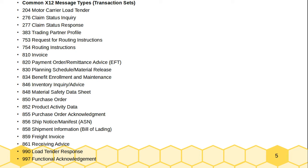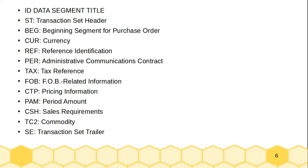There are multiple common X12 transaction types generally used. These include transaction sets: 204, 276, 277, 383, 753, 527, 54, 810, 820, 830, 834, 847, 848, 850, 852, 855, 856, 858, 859, 863, 861, 997. These are the common transactions used within the X12 structure.